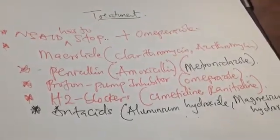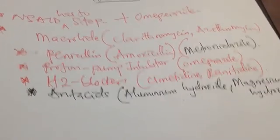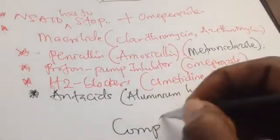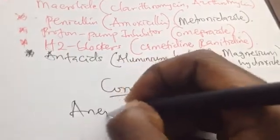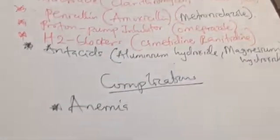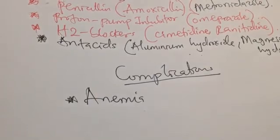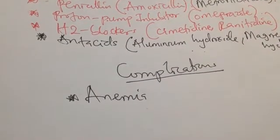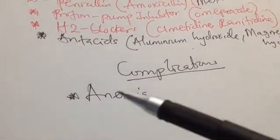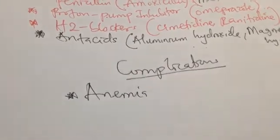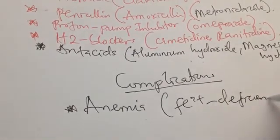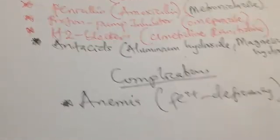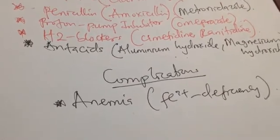Complications of peptic ulcer disease: The most important complication is anemia. Because the patient is bleeding due to the ulceration, they may develop iron deficiency anemia, which is microcytic and hypochromic.